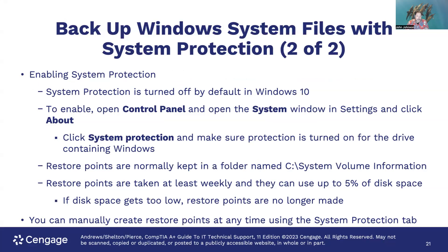Enabling System Protection: it's turned off by default in Windows 10. To enable it, go to Control Panel, open the System window, click About, then click on System Protection and make sure protection is turned on for the drive that has Windows on it. Restore points are normally kept in a folder named C:\System Volume Information. Restore points are taken at least weekly and can use up to 5% of disk space. If disk space gets low, Windows stops creating restore points automatically. You can also manually create restore points at any time using the System Protection tab.